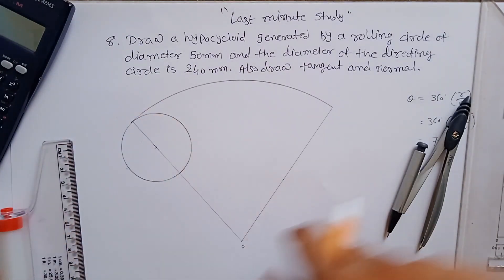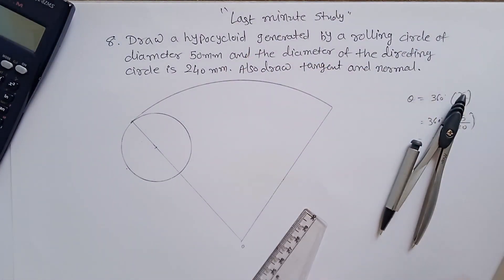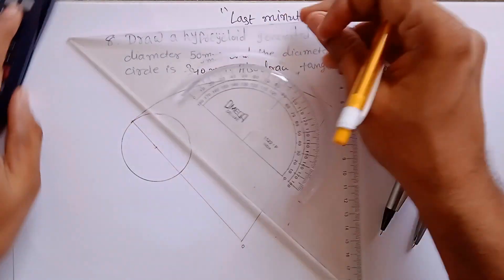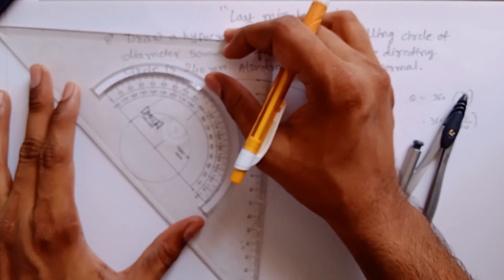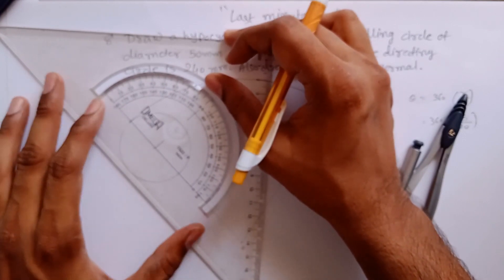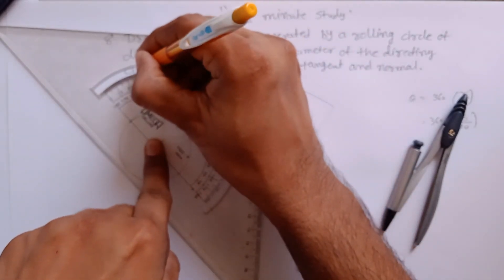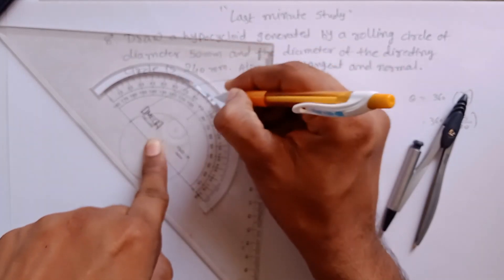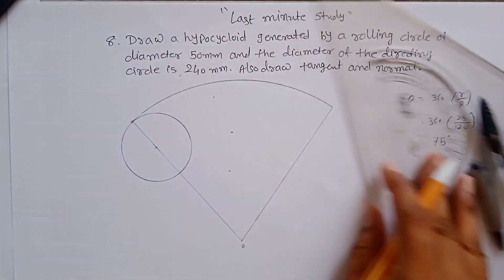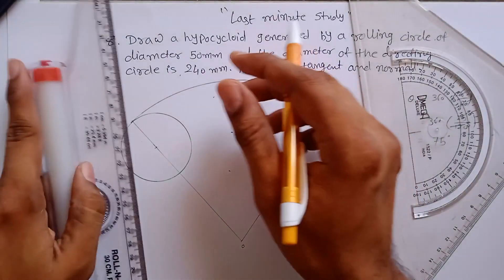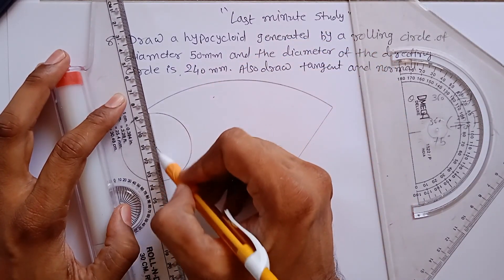First, draw a perpendicular line, then divide the circle into 12 equal parts. To divide it into 12 equal parts, measure using 30-degree and 60-degree angles, drawing construction lines from both sides of the circle.